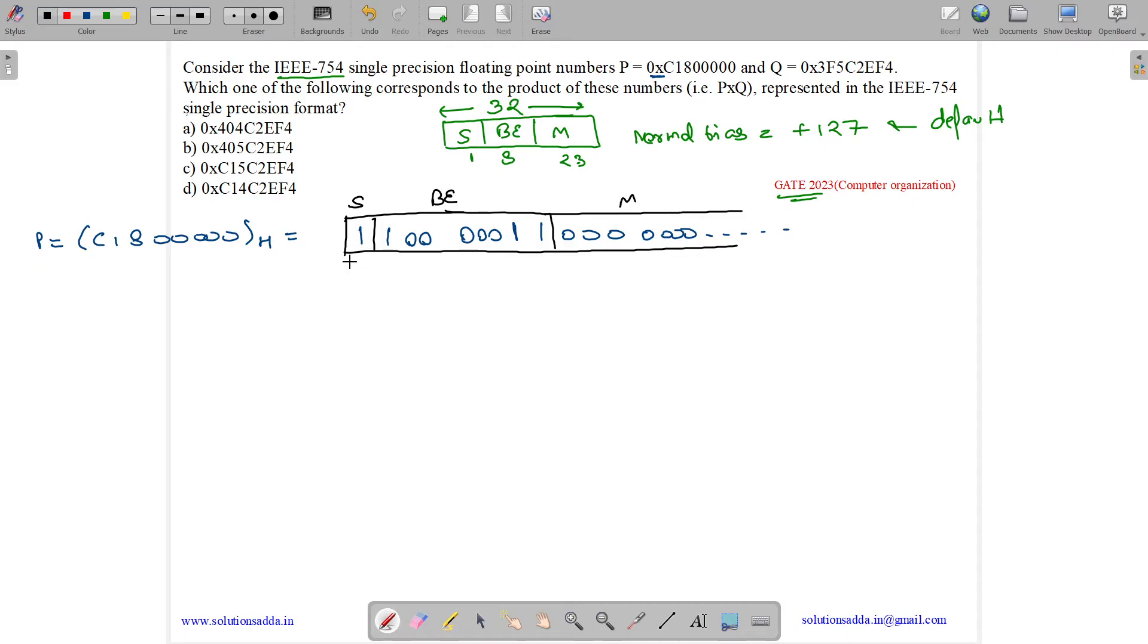As sign has 1, it means it is negative. Biased exponent is this, what is its value? It's 131. So what is actual exponent? Actual exponent is biased exponent minus bias. Biased exponent is 131, bias is normal bias 127, so actual exponent is 4. What is the value of mantissa? Mantissa is 0 as all are zeros.